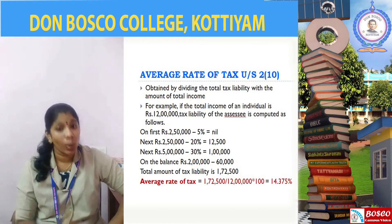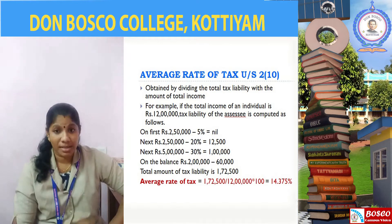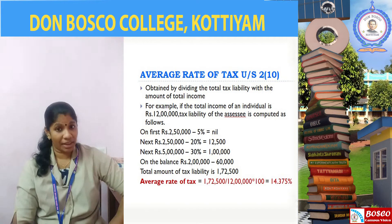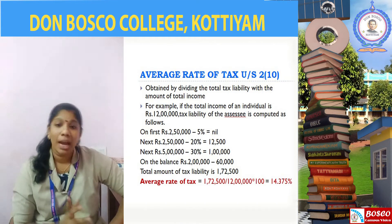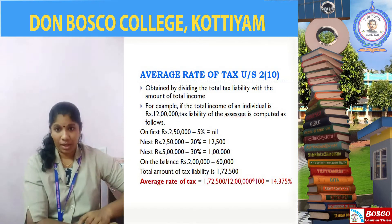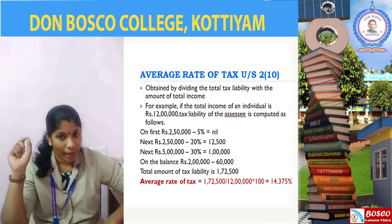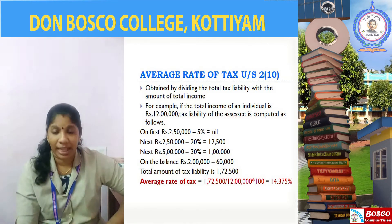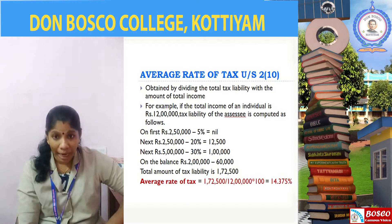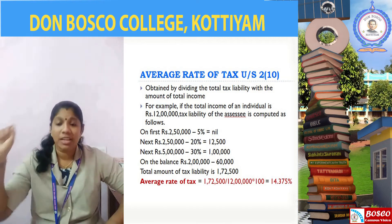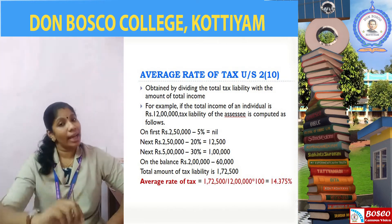Above 10 lakh — the remaining income is rupees 2 lakh. At 30%, 2 lakh gives rupees 60,000. So the total amount of tax is 12,500 plus 1 lakh plus 60,000 — that is rupees 1 lakh 72,500 — the total amount of tax payable by him to the tax authorities.